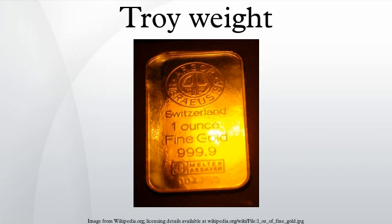Pennyweight: the pennyweight symbol is DWT. There are 24 grains in one DWT, and 20 DWT in one troy ounce. Because there were 12 troy ounces in the old troy pound, there would have been 240 pennyweights to the pound — the basis of the fact that the old British pound contained 240 pence. The D in DWT stands for denarius, the ancient Roman coin referred to in the New Testament, that equates loosely to a penny.